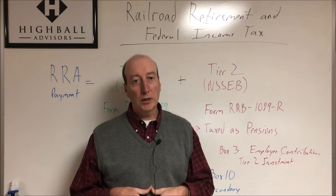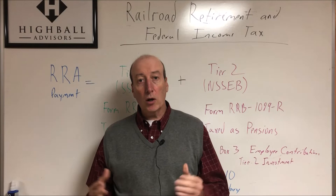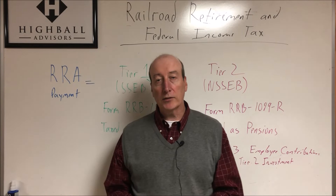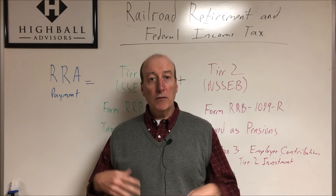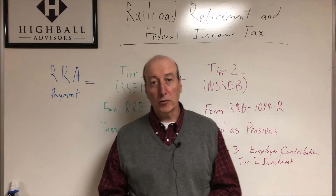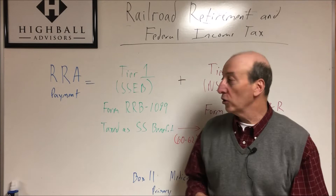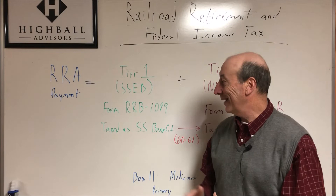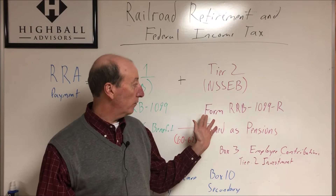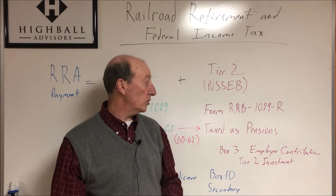Come January, you're going to receive forms from the Railroad Retirement Board or the IRS, and they're going to address the taxes on that. Even though you're getting one monthly benefit in retirement, you're going to get two forms — each form representing Tier 1 and Tier 2. For your Tier 1, you'll get form RRB-1099, and for Tier 2, you'll get form RRB-1099-R.